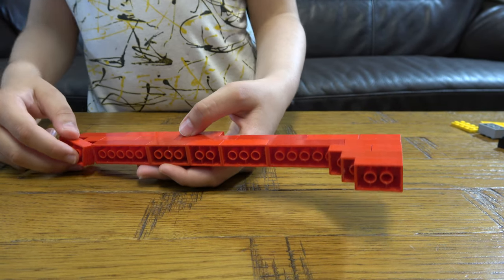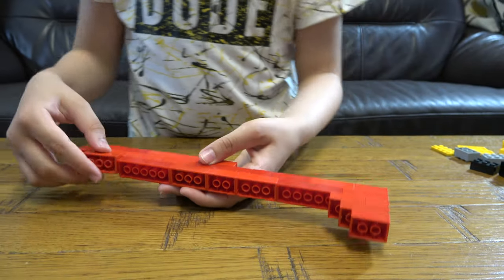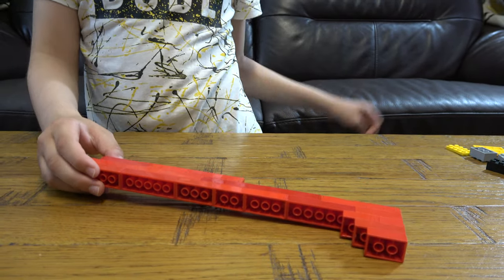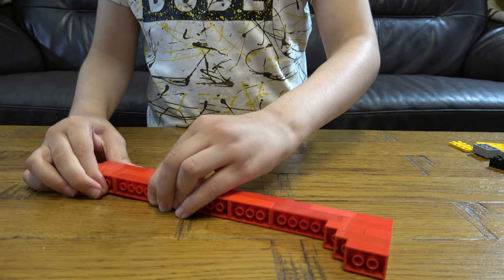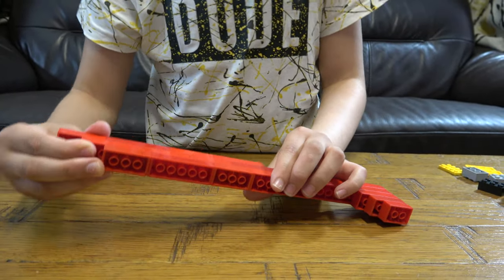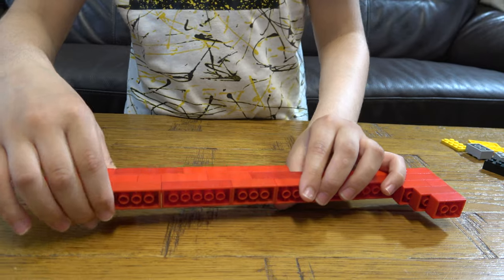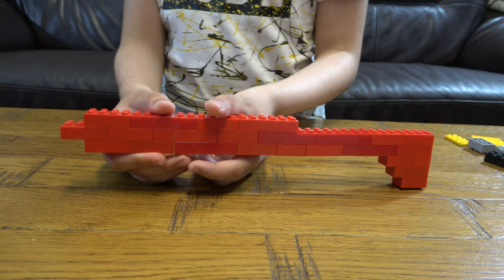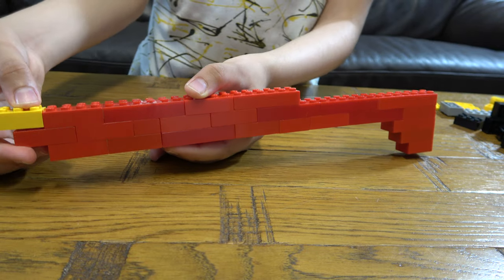This goes here, and then one of these down here like that. And then you get to this like that. Place the yellow here - this is the golden M1 Carbine.